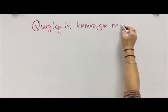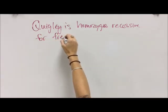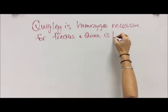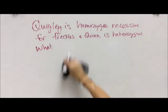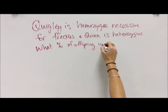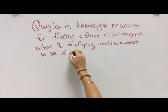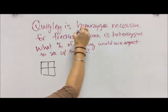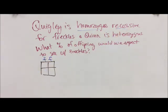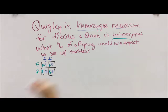Here's another example with a little heavier vocabulary. Quigley is homozygous recessive for freckles, and Quinn is heterozygous. What percent of their offspring would be expected to have freckles? We draw our square. If Quigley is homozygous recessive, that means two little f's. Quinn is heterozygous, so she has big F little f — one freckle allele, one non-freckle allele. We take our little f's across, big F across, and then little f's come down.